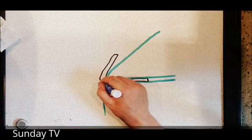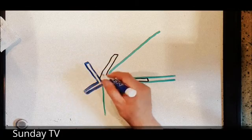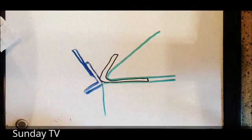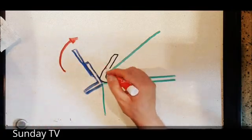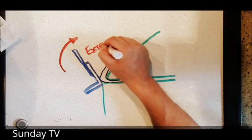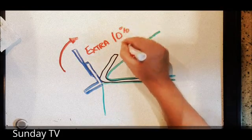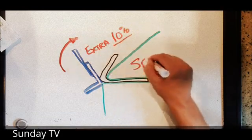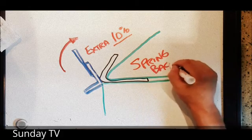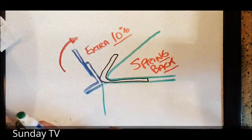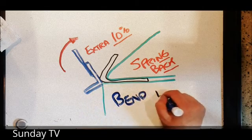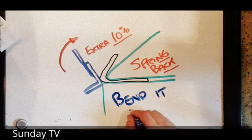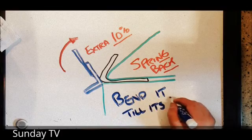Now, aluminum is kind of springy. And so, we actually have to bend it a little bit past the 90 degree mark. Usually, about 10% past. As you bend more and more material, you'll get a feel for what is just about perfect for getting that 90 degree bend. The material tends to spring back and try to go back to its original shape. So when we bend this, we need to just add a little bit.